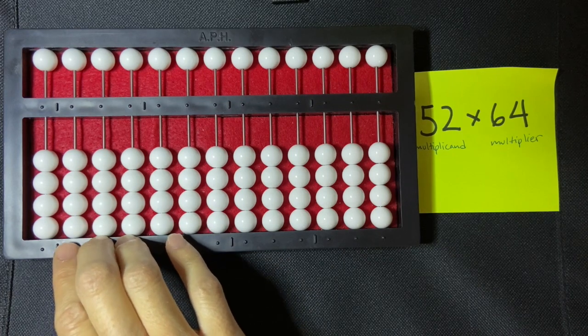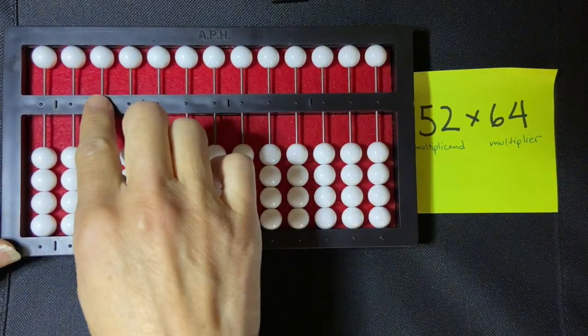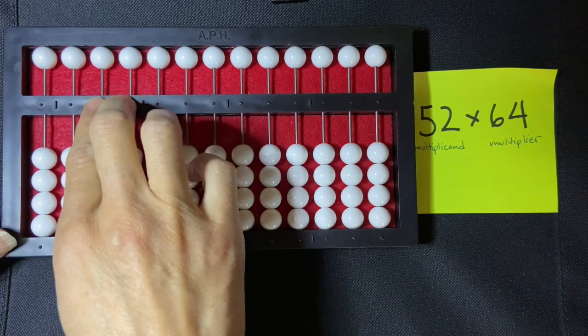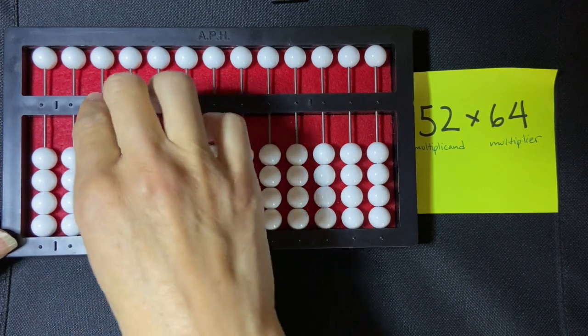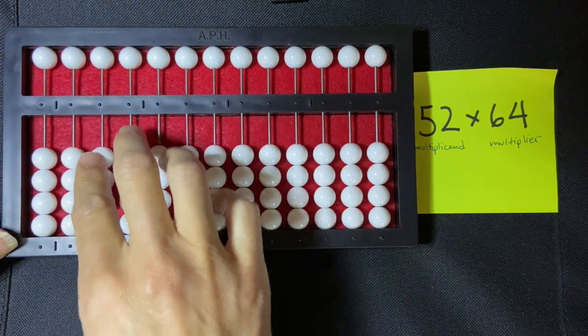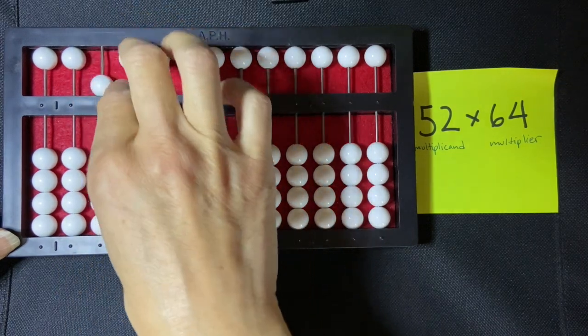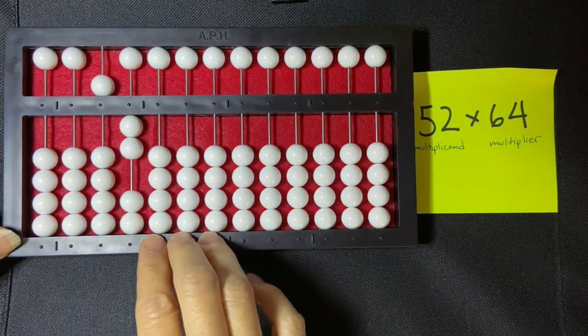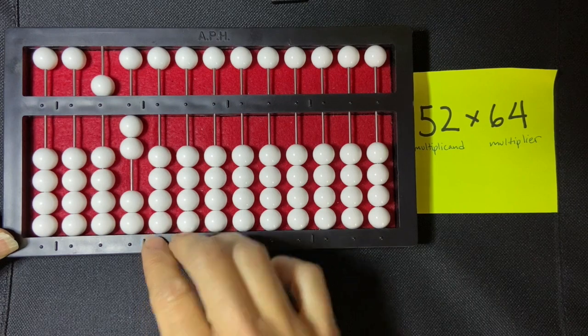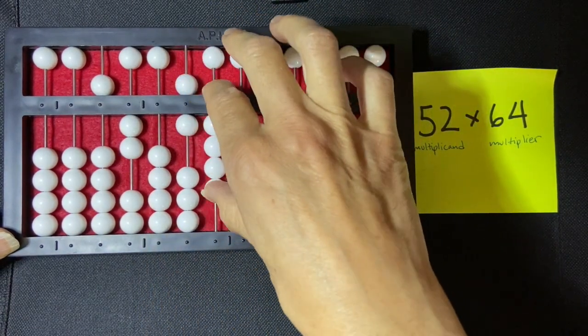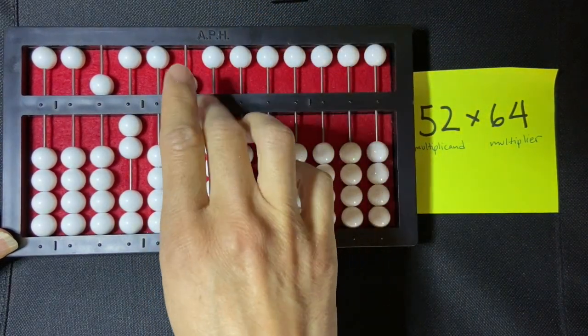And so it's a two-digit multiplicand, I'm going to set it in the tens and the units rod of my abacus. So I have 52, and then I move over to my millions period to set my multiplier, which is 64. Same thing, I'm going to set it in the tens and the unit rod.